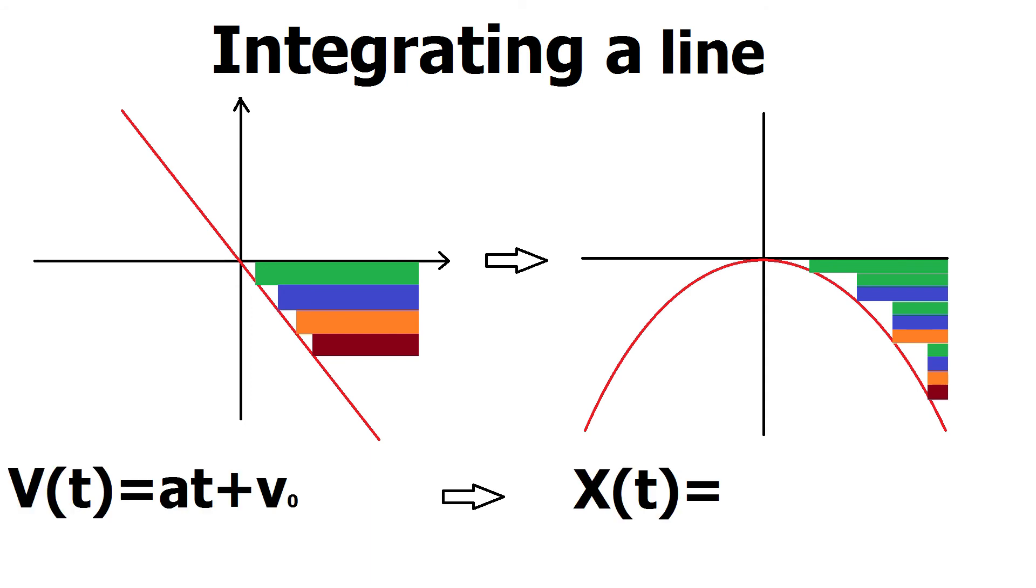We can write the equation again that integral of speed is position. First, we tackle the first term. As we know, the area under a straight line is a triangle. Even better, it's a right triangle. Which means the area underneath is easy to compute as one-half times the product of the catheti, which in this case ends up being one-half times acceleration times t squared.